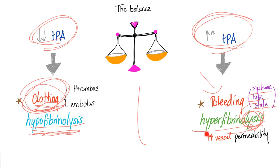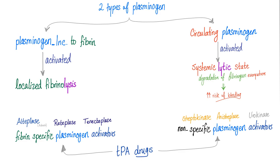Pay attention — this is the most important slide. There are two types of plasminogen: plasminogen incorporated into the fibrin, known as fibrin-bound plasminogen, and circulating plasminogen floating freely in the plasma. If fibrin-bound plasminogen is activated, we have localized fibrinolysis in one location only. If circulating plasminogen is activated, we have a systemic lytic state — plasmin floating around destroying clots everywhere, including useful minute clots from trauma. This leads to degradation of fibrinogen and fibrin everywhere, increasing bleeding risk. Localized fibrinolysis is good; systemic lytic state is dangerous.